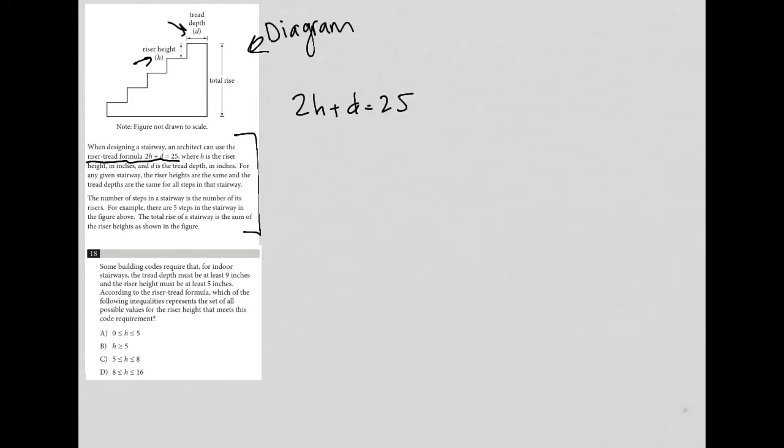Question 18 says some building codes require that for indoor stairways, the tread depth must be at least 9 inches. So that tells me that D must be greater than or equal to 9. I'm using a translate word problem strategy for number 18 and writing down any quantitative information. So the tread depth must be at least 9 inches, meaning D is greater than or equal to 9.